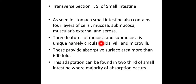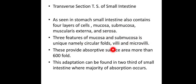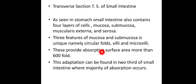This is called the mucosal layer. The sub-mucosal layer is unique in containing circular folds with villi and microvilli. These circular folds and microvilli serve the function of absorption — they provide the surface for absorption of nutrients, greatly increasing the absorptive surface area. This adaptation is found in two-thirds of the small intestine where the majority of absorption occurs.